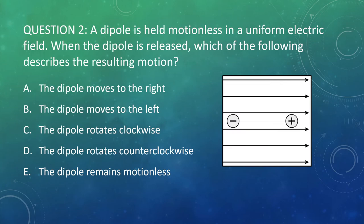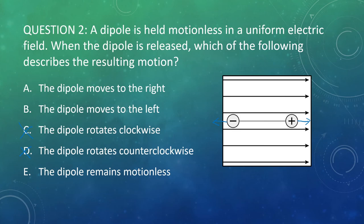Question two: a dipole is held motionless in a uniform electric field. When released, which describes the resulting motion? In this case, the positive charge wants to move with the field and the negative wants to move against it, but there's no component pointing up or down, so it's not going to rotate. They're tugged equally in both directions, so it won't move left or right either — it stays still. The forces balance out.